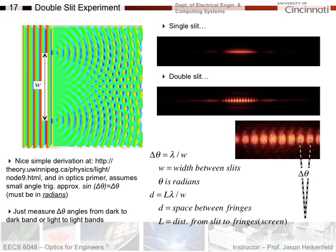is equal to L, the distance from the slit to the fringes. So that means from the slit here, the distance to the screen where you observe it, and divided by W, which is the spacing between the slits.